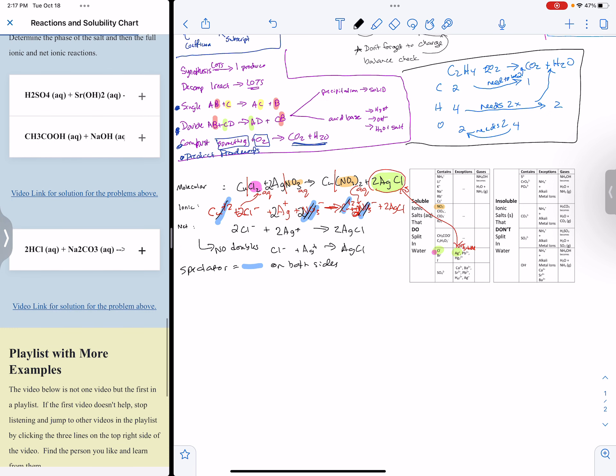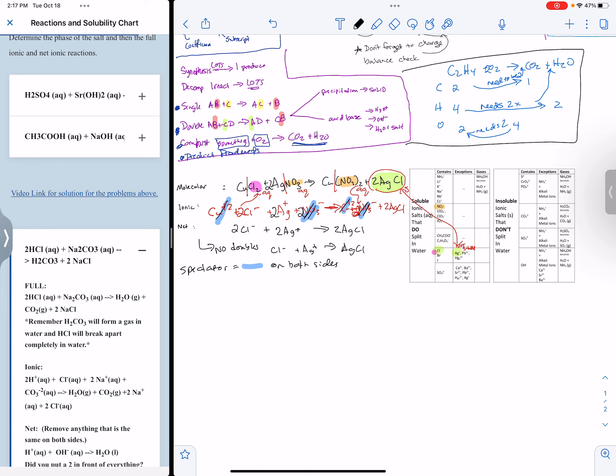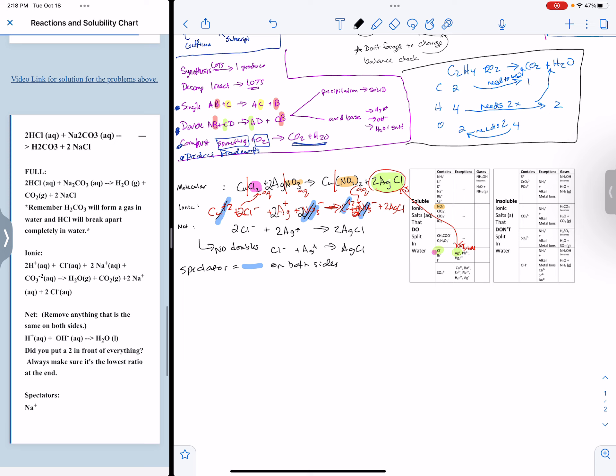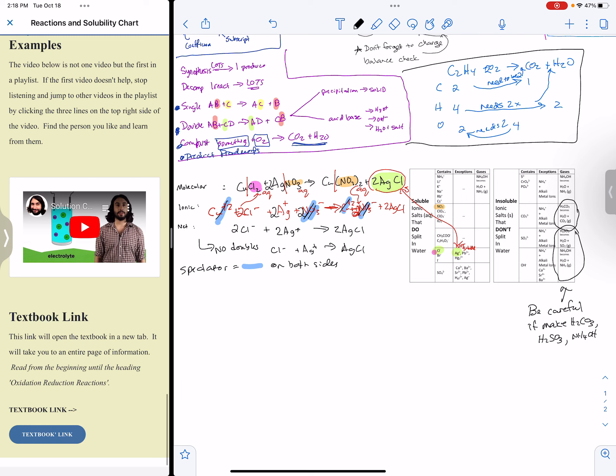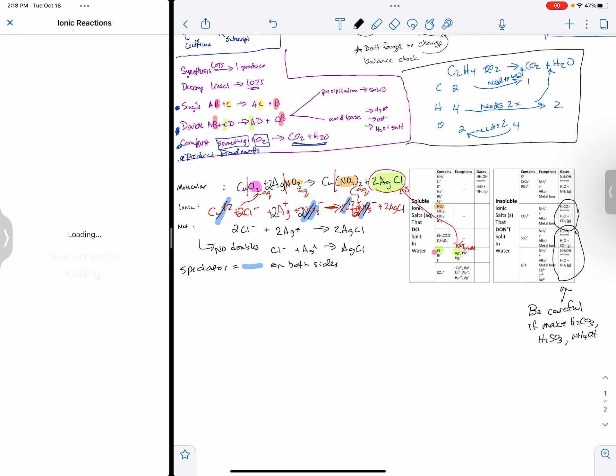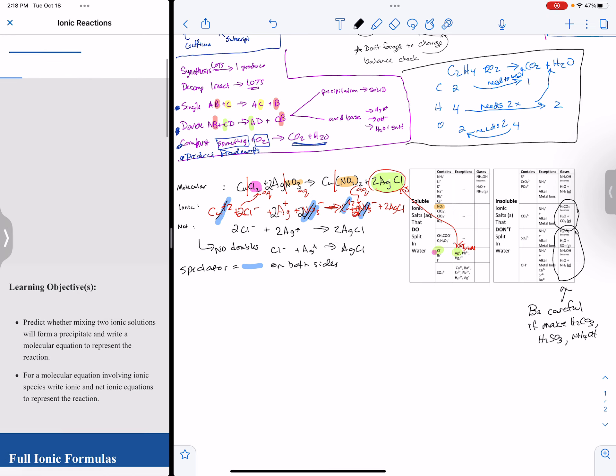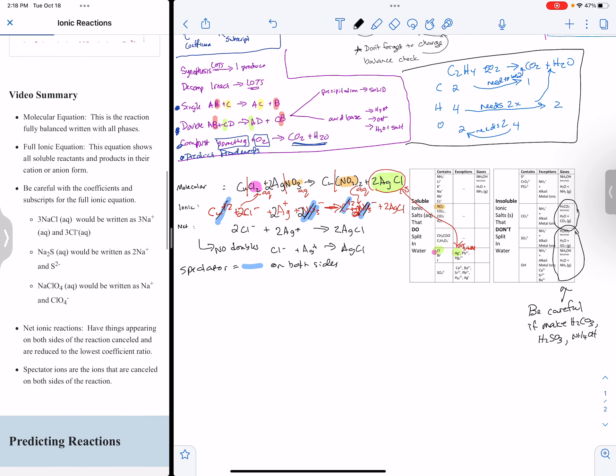There's a lot of examples in here. There's examples about making water and gas, doing double displacement. Now right around in here, this one had a thing about when there were a few things that make a gas. H2CO3 is one of them. If I thought I might forget this column, I might've circled that. Be careful if you make H2CO3, H2SO3, NH4OH.